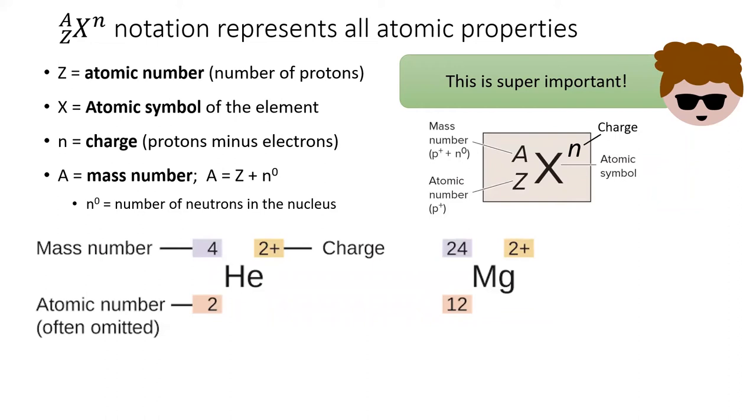Because each element has a unique number of protons, each atomic symbol can only correspond to one atomic number. So it's common to omit the atomic number, since you can find it by looking up the symbol on the periodic table.